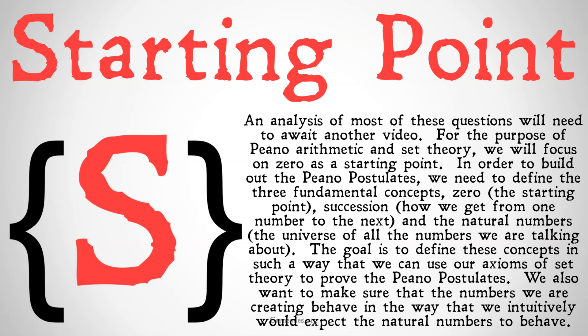In order to build out the Peano postulates, we need to define three fundamental concepts: zero, the starting point for the natural numbers; succession or successorship, how we get from one number to the next; and the natural numbers themselves, the universe of all numbers that we are talking about.